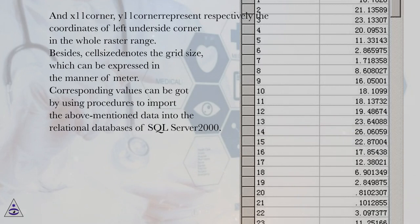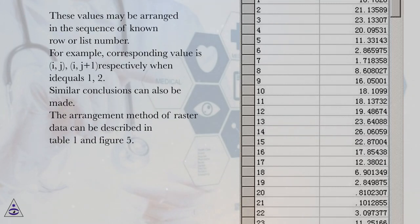Corresponding values can be got by using procedures to import the above mentioned data into the relational databases of SQL Server 2000. These values may be arranged in the sequence of known row or list number. For example, corresponding value is i, j, i, j+1 respectively when id equals 1, 2.